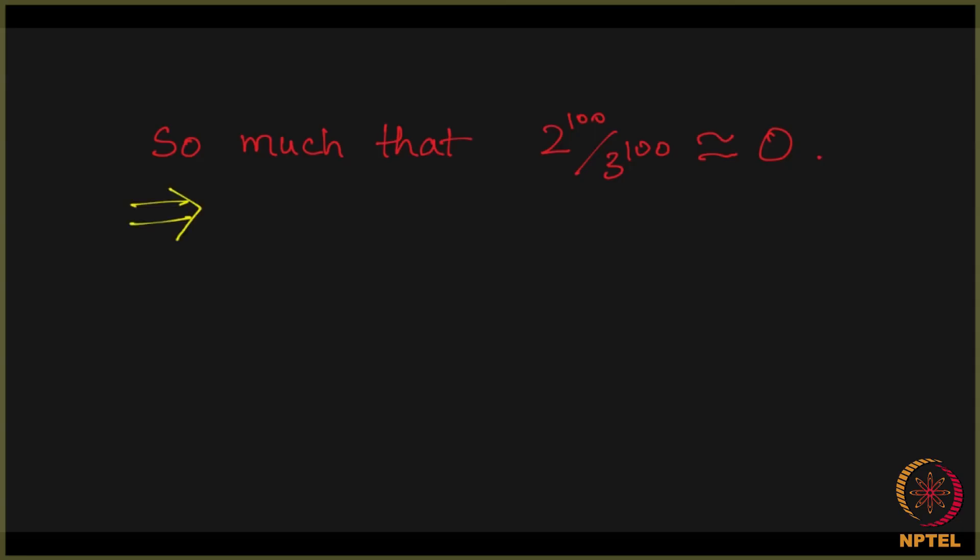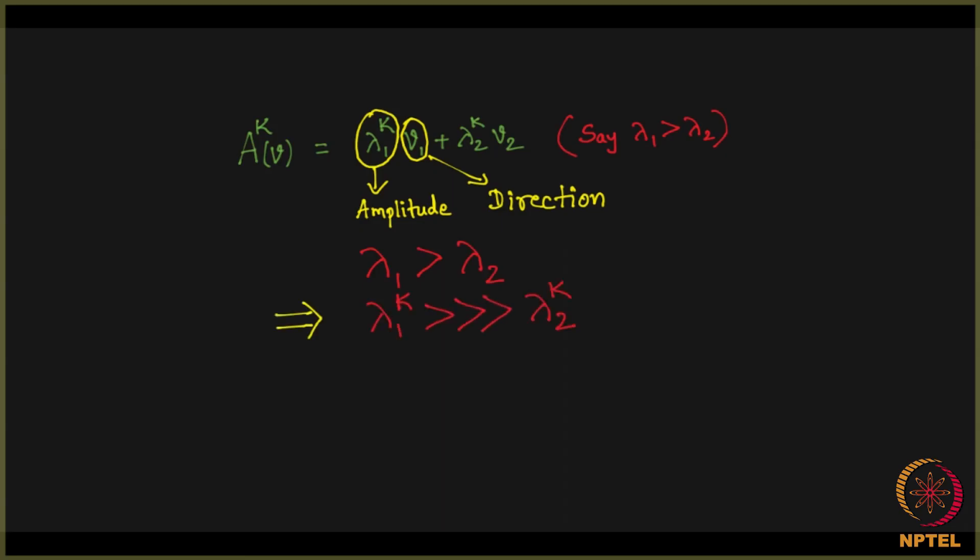It is so big that the ratio is 0. We saw that, which implies that 3 to the 100 is several folds bigger than 2 to the 100. I am just stating the same thing repeatedly. So what? So we can make a big inference now. We observe that when you empower A, when you repeatedly apply A on any random vector V, you can always write this as lambda 1 to the k V1 plus lambda 2 to the k V2. What happens? This is amplitude and this is the direction. We discussed that. Lambda 1 is greater than lambda 2, which implies lambda 1 to the k is way greater than lambda 2 to the k if k is big. We saw 2 and 3 example and k was 100. It was huge, so much that the bigger one simply completely dominates over the smaller one, so much that the smaller one is negligible in front of the bigger one, so much so that the ratio goes to 0.